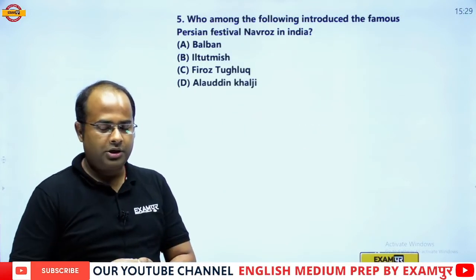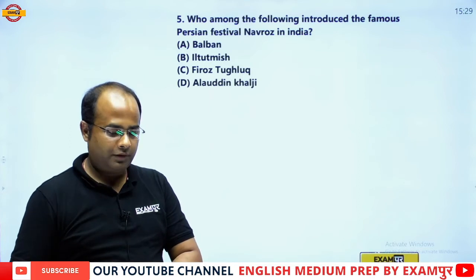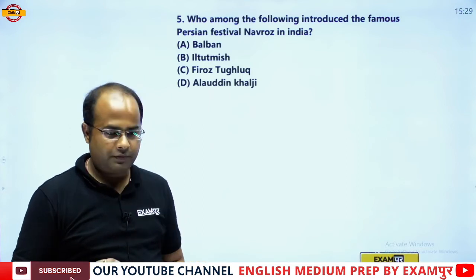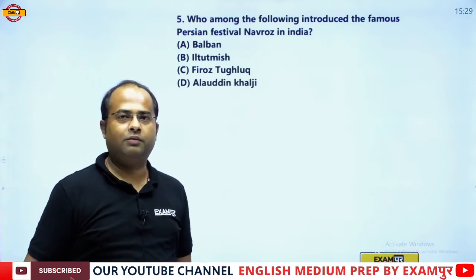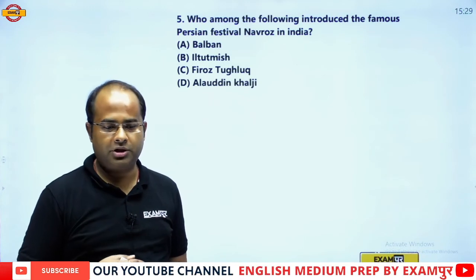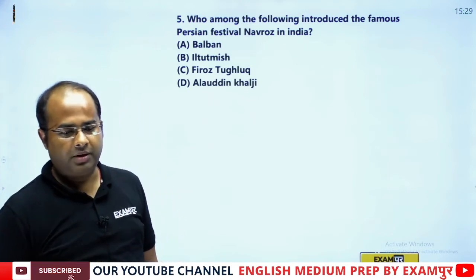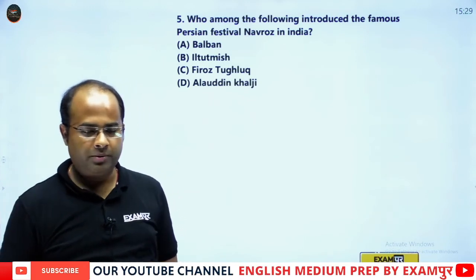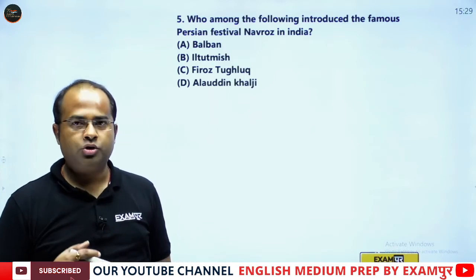The next question: who among the following introduced the famous Persian festival Navroz? Is it Balban, Iltutmish, Feroz Shah Tughlaq, or Alauddin Khilji?